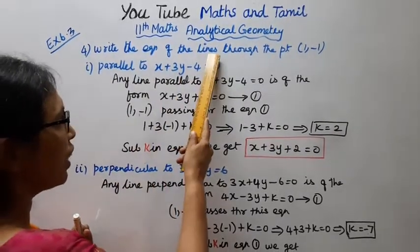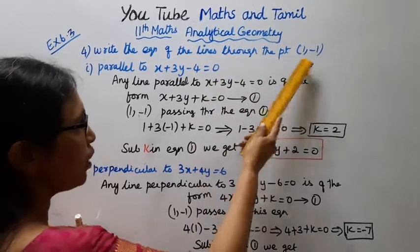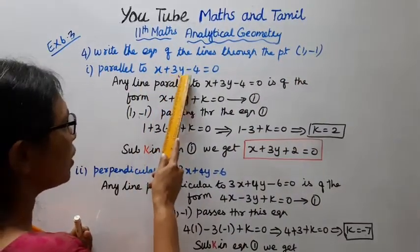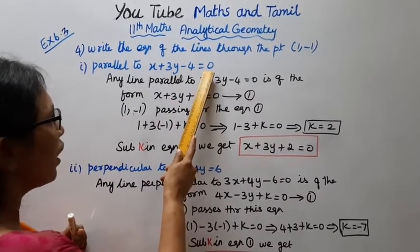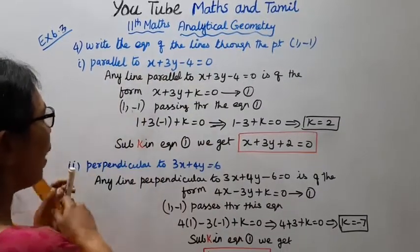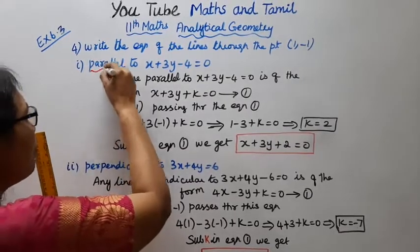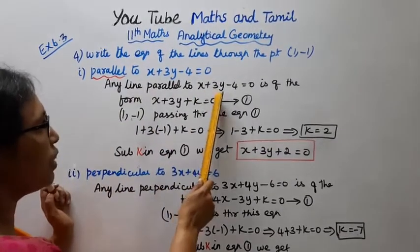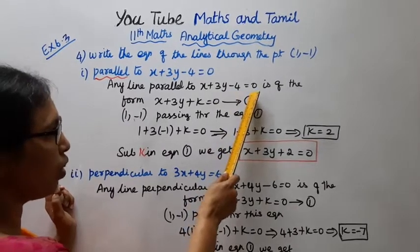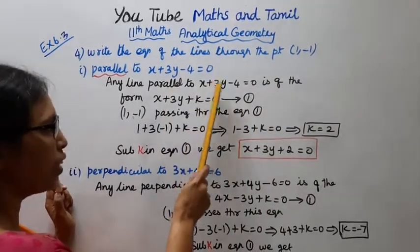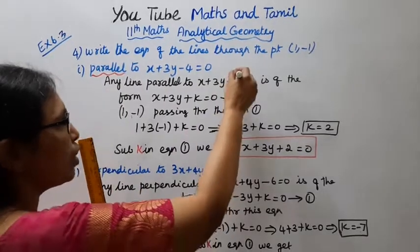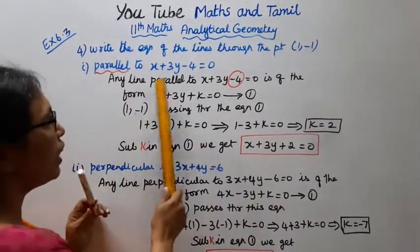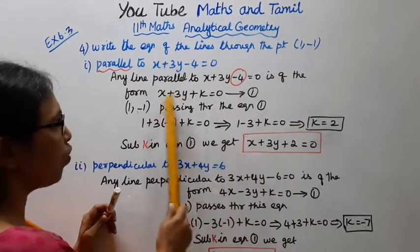Write the equation of the lines through the point (1, -1). First subdivision: parallel to x + 3y - 4 = 0. Now, any line parallel to x + 3y - 4 = 0 can be written as x + 3y + k = 0. That is the formula.